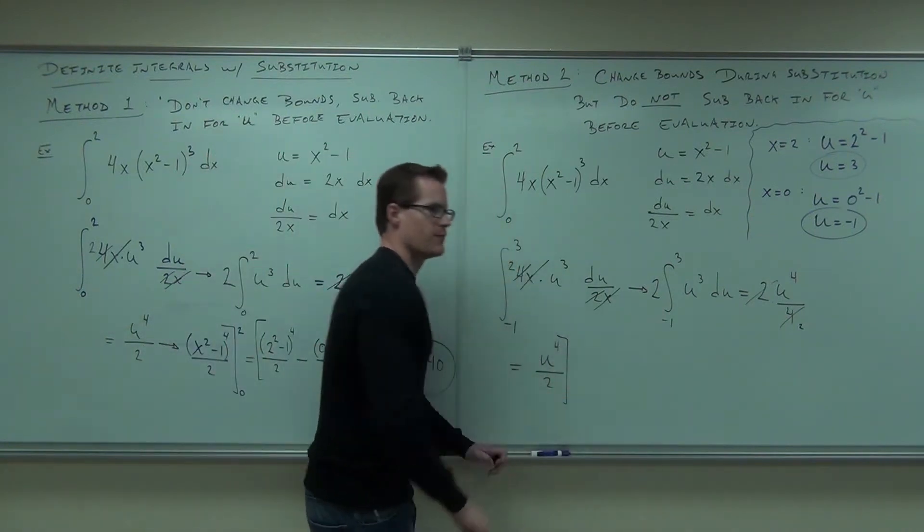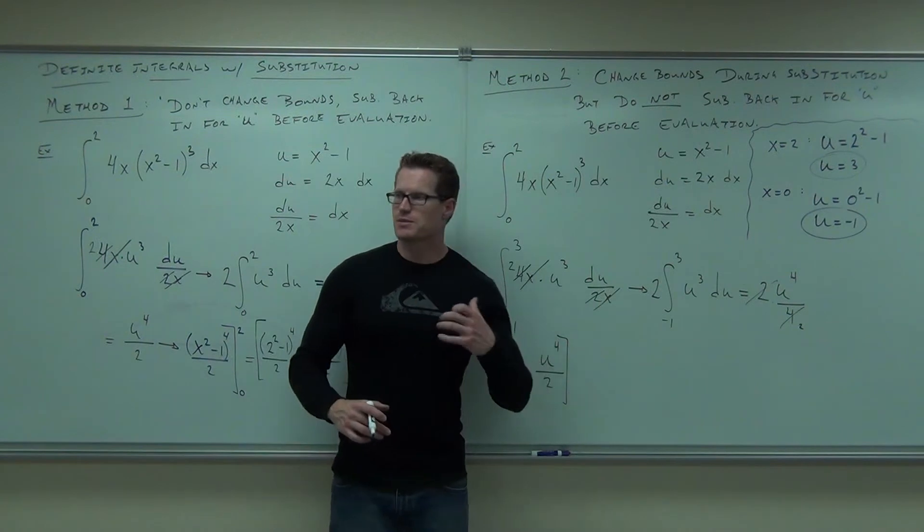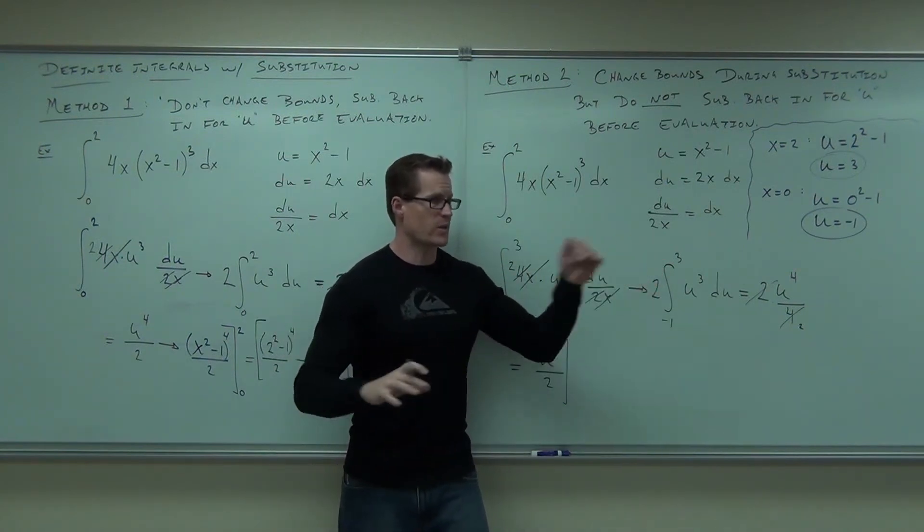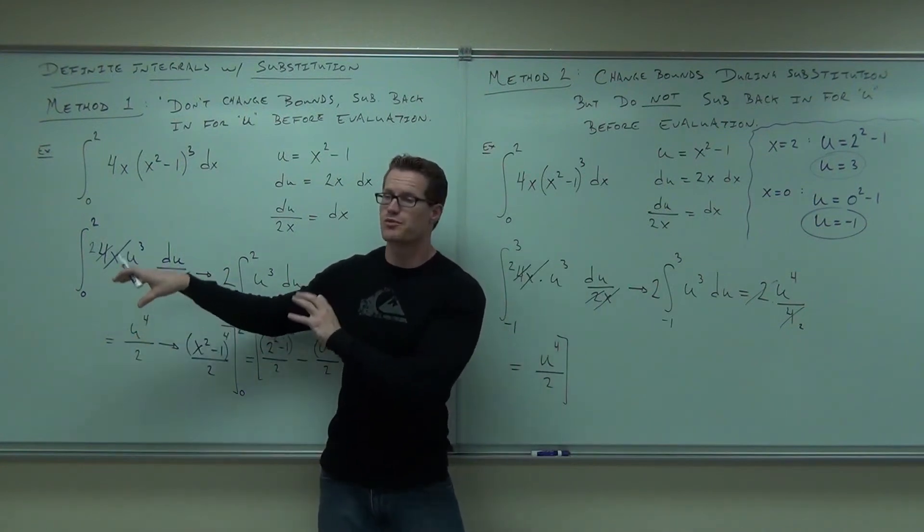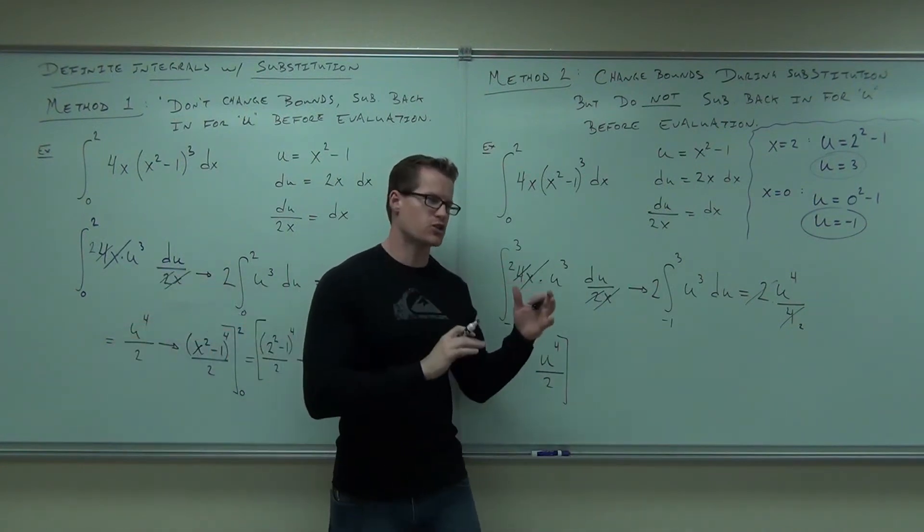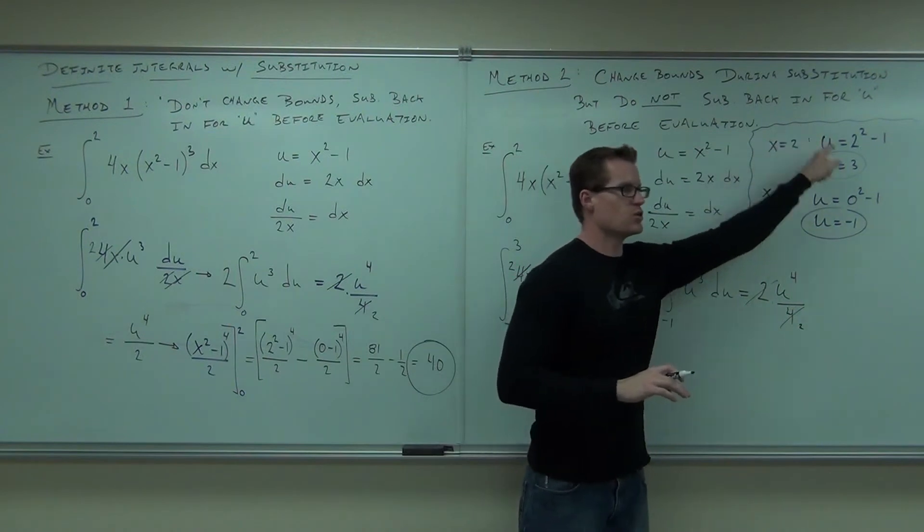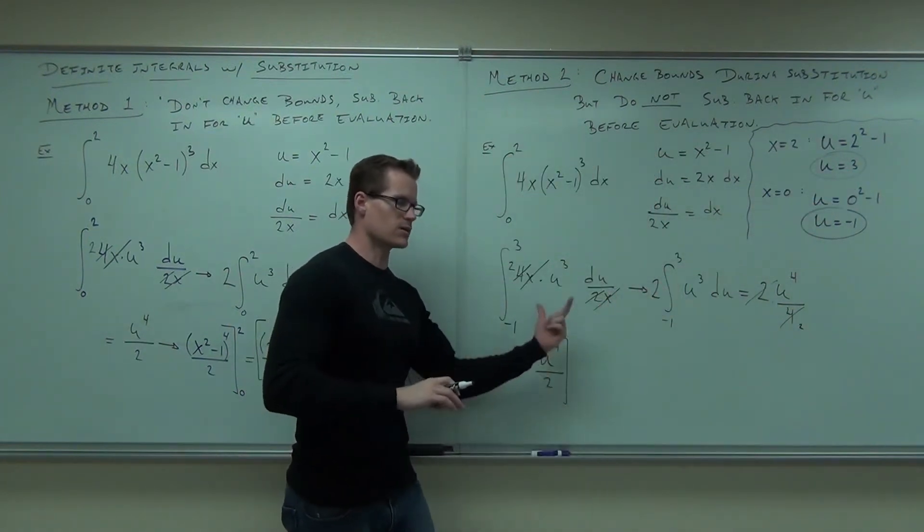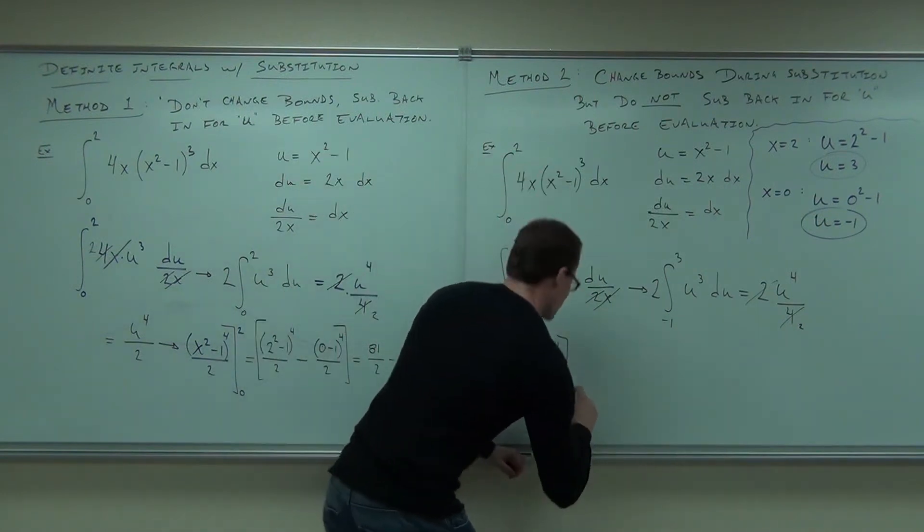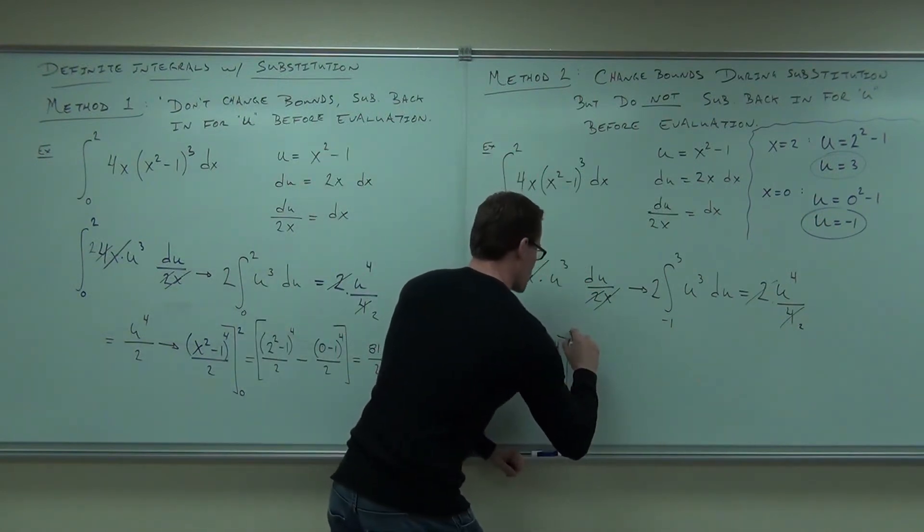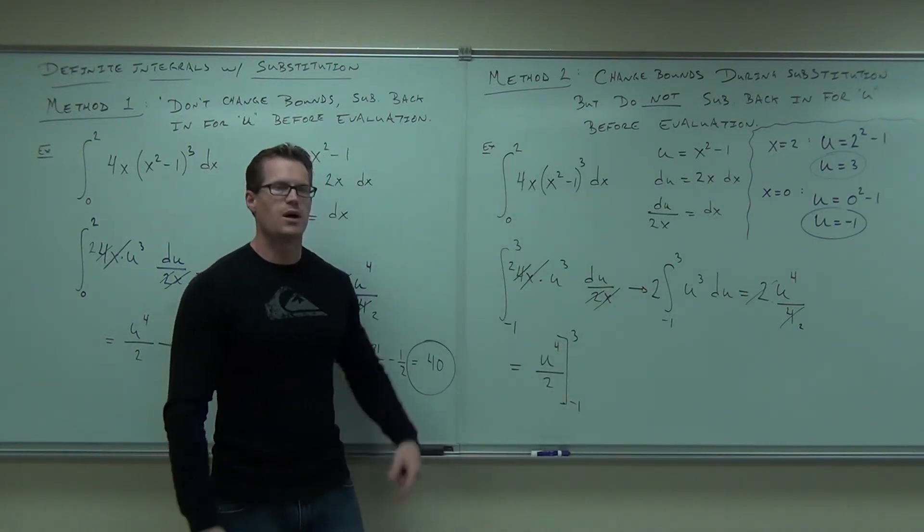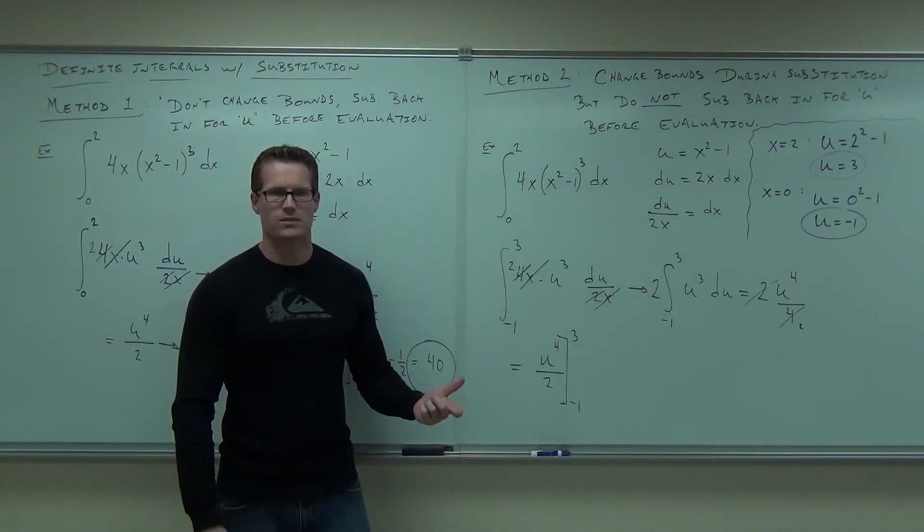But now when I do my evaluation, do I have to substitute back in for the u? No, because we did our bounds. And that's the only reason why we had to here, because the bounds were in terms of x. Here, you've already changed them. You've taken x's and you made u's out of them. Once you make u's out of them, you can use it right here. Get it? You can use it here. Negative 1 to 3. Because those are in terms of u. Plug them in, you're going to get the same answer.